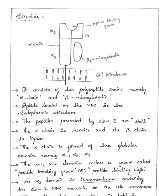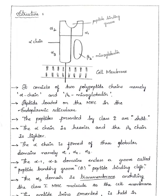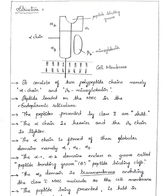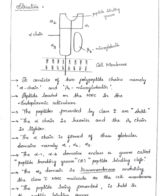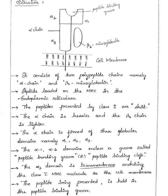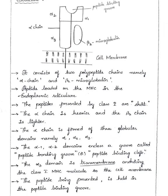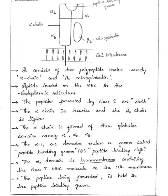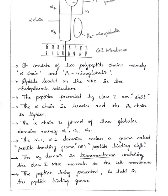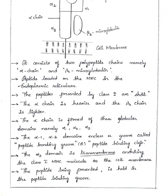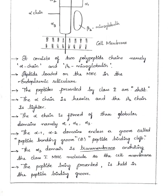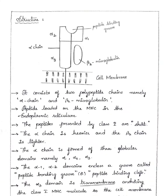Here you can see the structure of the Class 1 MHC molecule. It consists of two polypeptide chains: the alpha chain and beta-2 microglobulin. The peptide is loaded on the MHC in the endoplasmic reticulum, and the peptides presented by Class 1 are short. The alpha chain is heavier and the beta-2 chain is lighter. The alpha chain is formed of three globular domains: alpha-1, alpha-2, and alpha-3. The alpha-1 and alpha-2 domains enclose a groove called the peptide binding cleft.